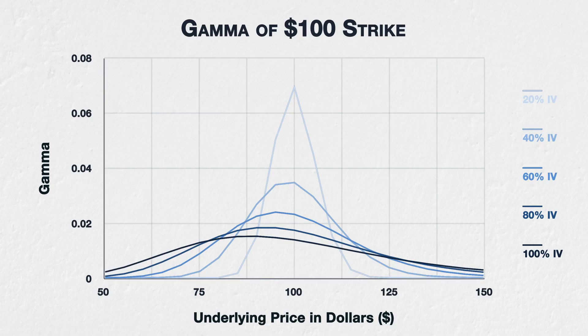This is the same $100 strike option with 30 days to expiry. In the previous lecture we only looked at the 40% implied volatility level, but now we can see IV levels from 20% to 100%. At 20% IV we see a sharp peak in gamma when the option is at the money, falling off quickly in both directions.